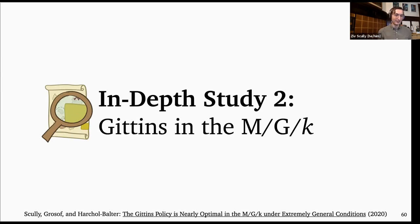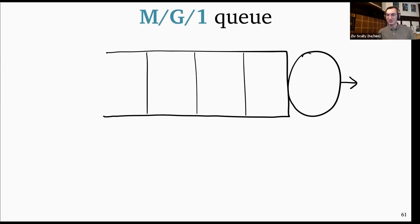I'm going to start by carefully defining the model. So far for the survey I've been pretty fast and loose with describing the model at a high level. I'm going to take some time to go through the details to make sure we all understand, since we're going to spend about 50 minutes analyzing this. I'm going to start by defining the MG1 queue — a classic single-server queuing system with a single server and a queue that can hold any number of jobs waiting for service.